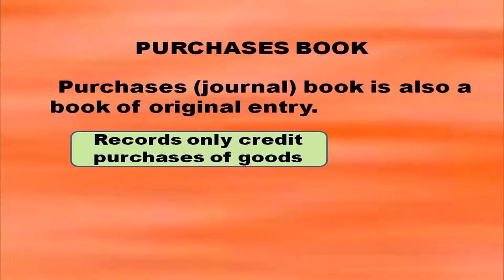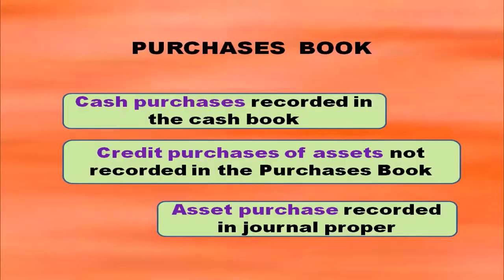Coming to the first type of special purpose book, that is the purchases book. Purchases book is a book of original entry and in this book we will record only credit purchases of goods. Credit purchases of goods only will be recorded in the purchases book. Cash purchases are recorded in the cash book, so they are not recorded in the purchases book.